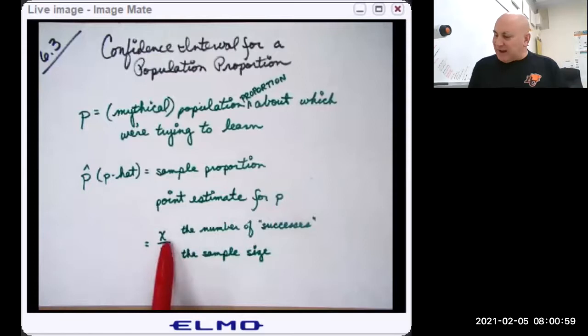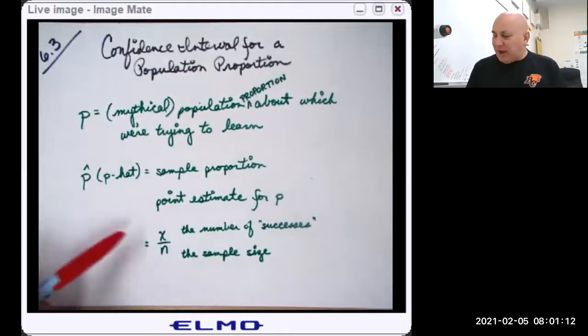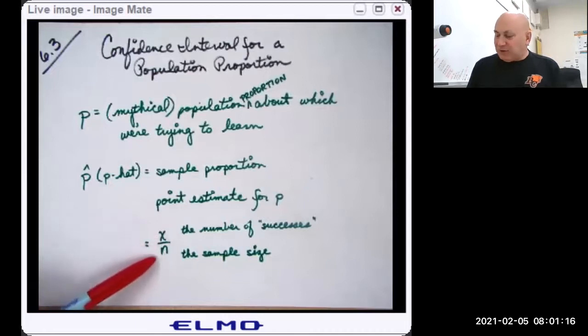And P hat is X over N. X being your number of successes, N being your number of trials. So if we want to know what proportion of people support candidate A, I would go out and survey a bunch of people. How many of them supported candidate A would be X. The total number of people I surveyed would be N.